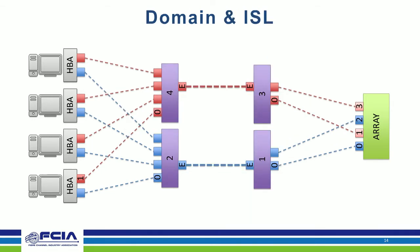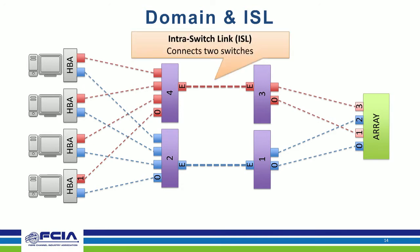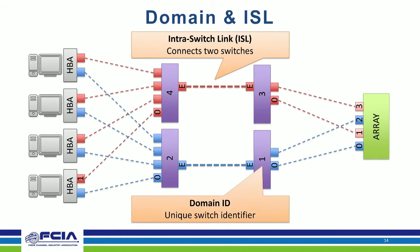When we have more than one switch in the fabric, those switches need to talk to each other. We connect them using an inter-switch link — an ISL, connecting two E-type ports. The ISLs carry the data between switches. We also have the concept of a domain ID to differentiate one switch from another within the same connected system.